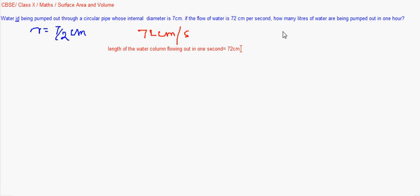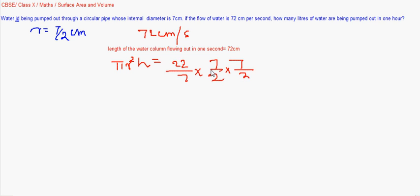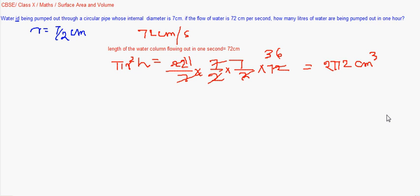The volume of water flowing out in one second is the volume of a cylinder with radius 7 by 2 and length 72 centimeters. So it is pi r squared h, that is 22 by 7 into 7 by 2 squared into 72, which gives 2772 cubic centimeters as the volume of water flowing in one second.